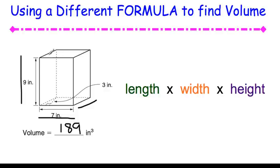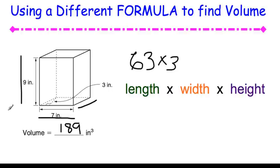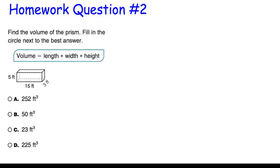For fifth graders, if you wanted to use a calculator and just plug in 9 times 7 times 3, you could do that. Or you could multiply 9 times 7 to get 63, then set up a lattice to multiply that by the remaining number 3, and that will give you the same answer. Homework question 2: find the volume of the prism, submit online whether it's A, B, C, or D, and remember to show your work in your notebook.